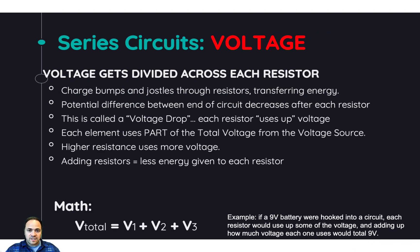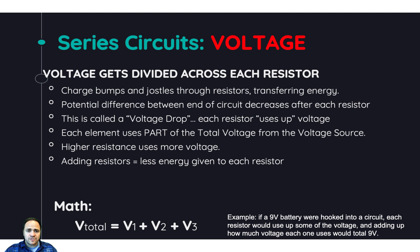Voltage gets divided across each of the resistors in a series circuit. When charges are flowing and they go through a resistor, they're bumping into the resistor and transferring energy — that's how we get energy to our devices. Since energy is being taken away from charge, the potential difference between that point and the end of the circuit decreases. We say there's a voltage drop across resistors, because there's less potential difference from that point to the end of the circuit. All of the resistors in a series circuit use up the voltage from the voltage source, and it depends on how much resistance each resistor has — higher resistance means more voltage is used.